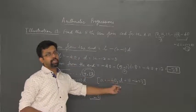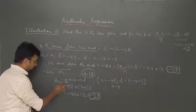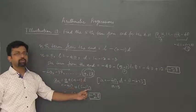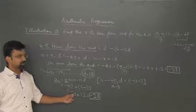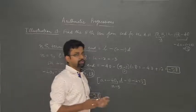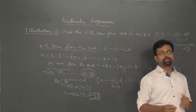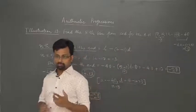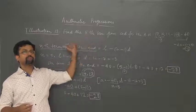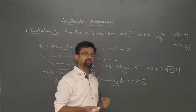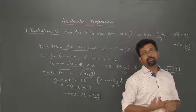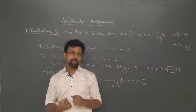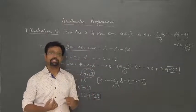The value of N remains 5. For this rearranged AP, using the formula A_N equals A plus (N minus 1) into D: A is now minus 40, N is 5, and D is 3 (since reversing the order reverses the sign of the common difference — it was minus 3, now it is 3). Substituting these values gives minus 28 again. There are two ways to find the nth term from the end: use L minus (N minus 1) into D, or reverse the AP and use A plus (N minus 1) into D.